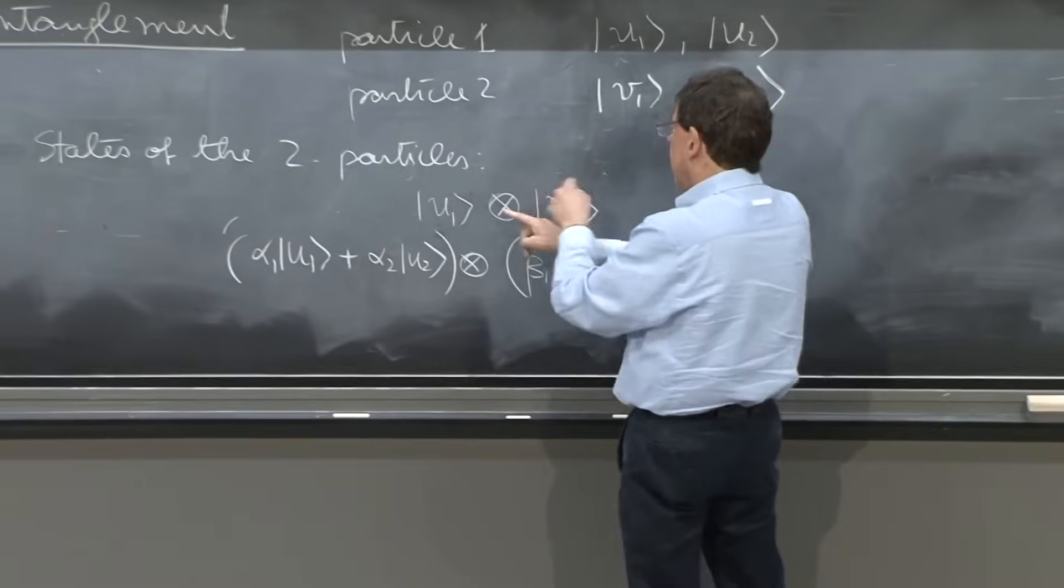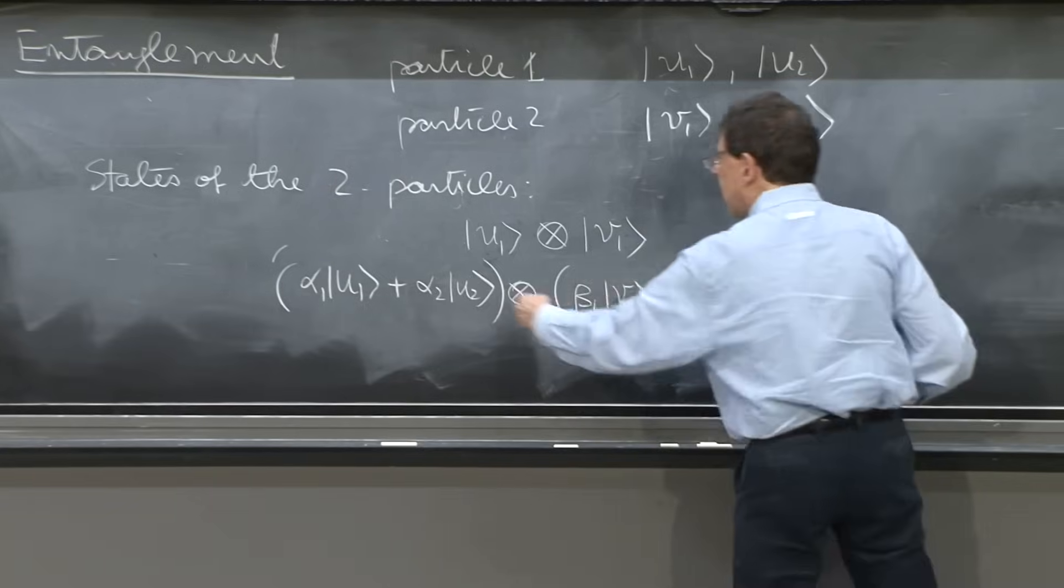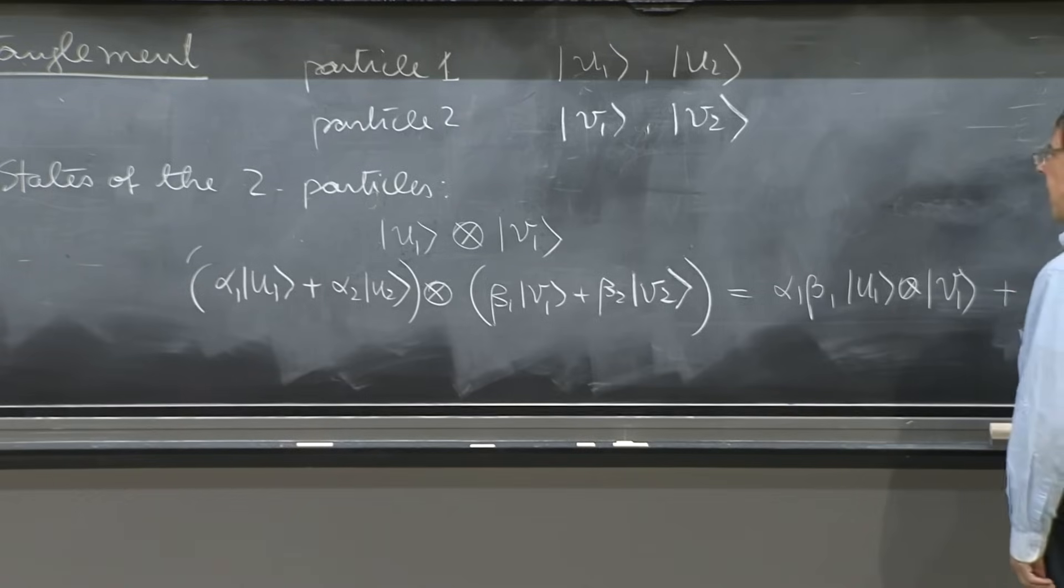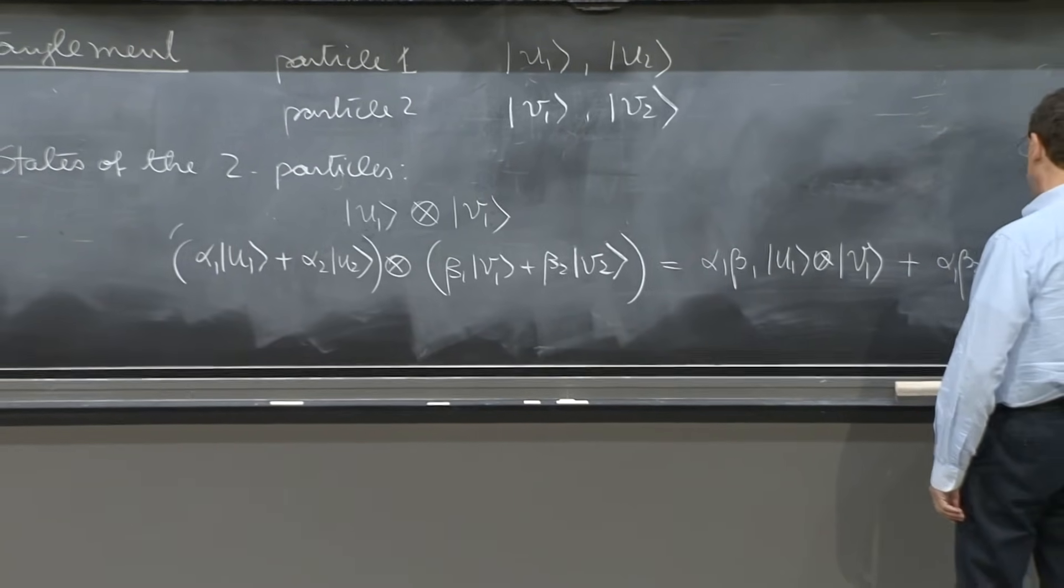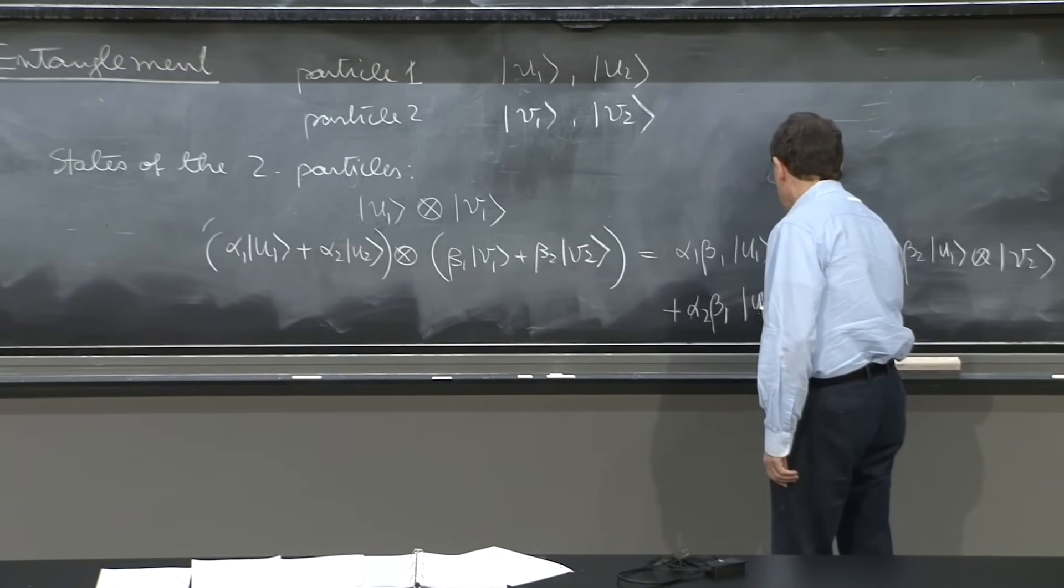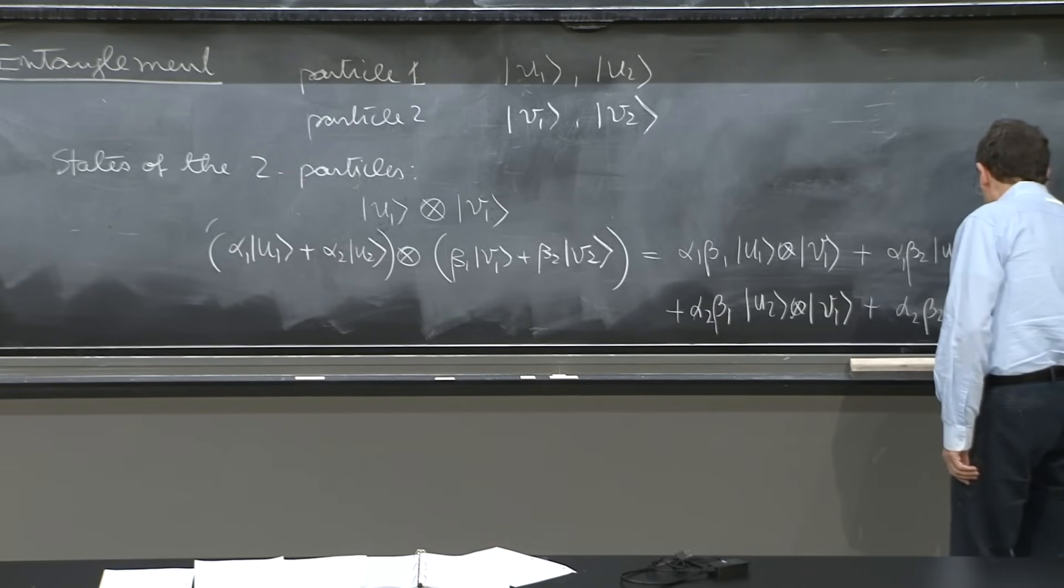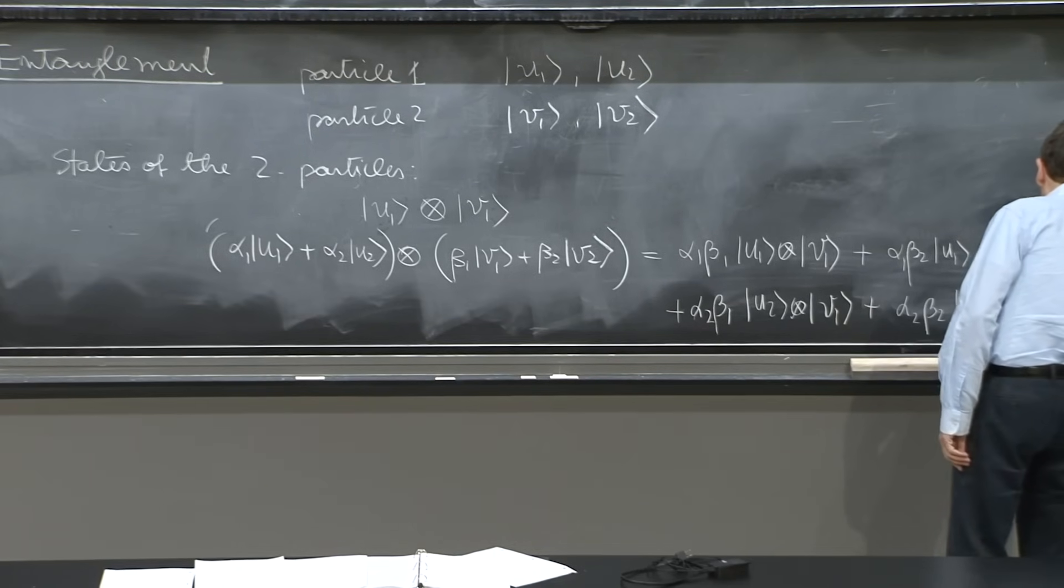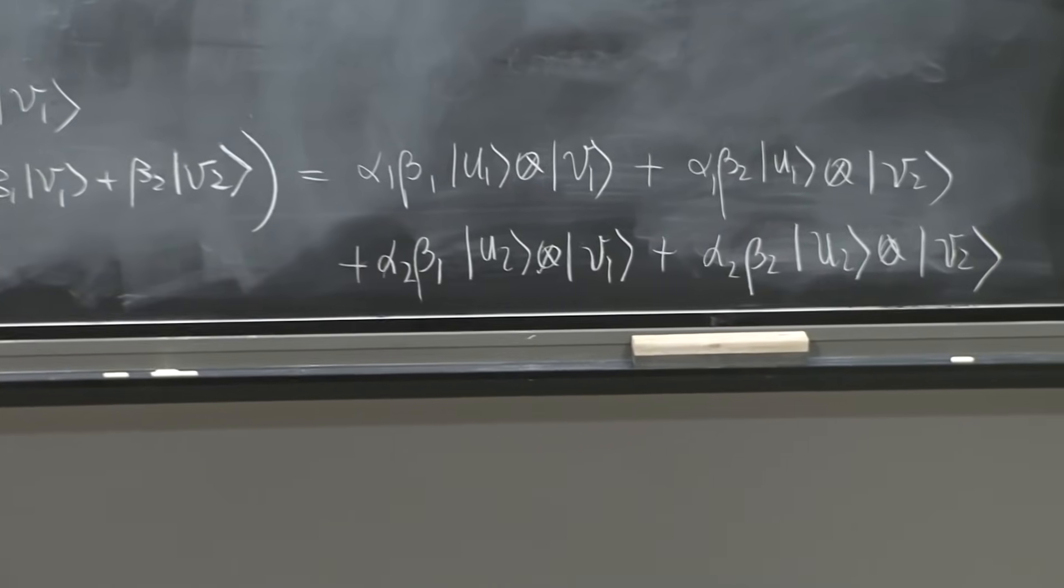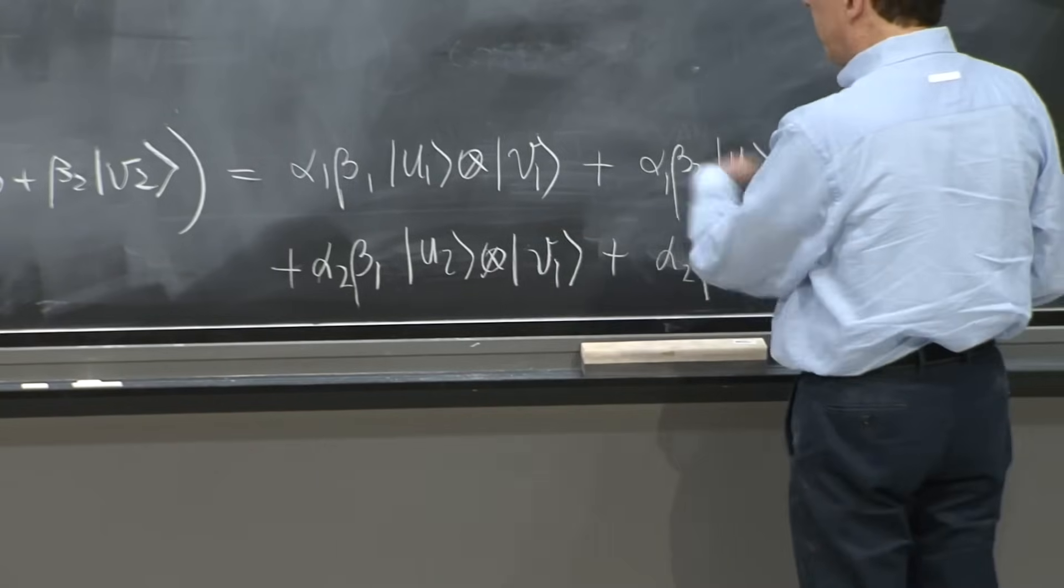Except that, as I said, you never move the states across. So you just distribute. You have alpha 1 beta 1, the number goes out, u1 v1, that's the first factor, plus alpha 1 beta 2 u1 v2 plus alpha 2 beta 1 u2 v1 plus alpha 2 beta 2 u2 v2. I just multiplied and got the numbers out. The numbers can be moved out across this product. So that's a state, a superposition of states.